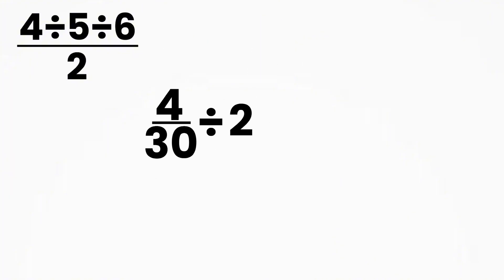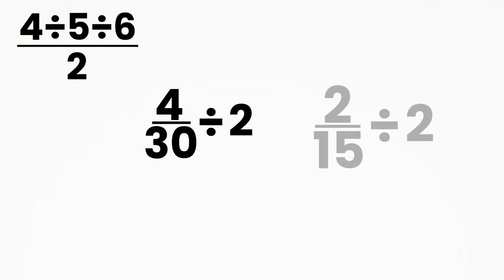Step 3: divide by 2. Now our question becomes 4 over 30 divided by 2. Let's make 4 over 30 simpler. If we divide both the top and bottom by 2, we get 2 over 15.